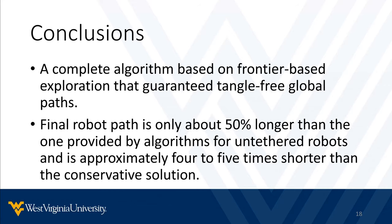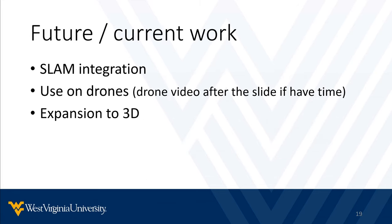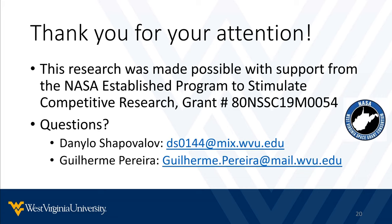In conclusion, we succeeded in developing an algorithm based on frontier-based exploration that guarantees tangle-free global paths provided the length tolerance delta L is selected properly. The final path ended up only about 50% longer than the one used in the untethered approach, and approximately 4 times shorter than the conservative approach of returning to the base after every iteration. We are currently further improving the algorithm and implementing it with SLAM-based systems for fully autonomous exploration without relying on external tracking. We have also successfully applied this algorithm with SLAM integration on a drone, but only in 2D for now, though we plan to extend this system to 3D in the future.